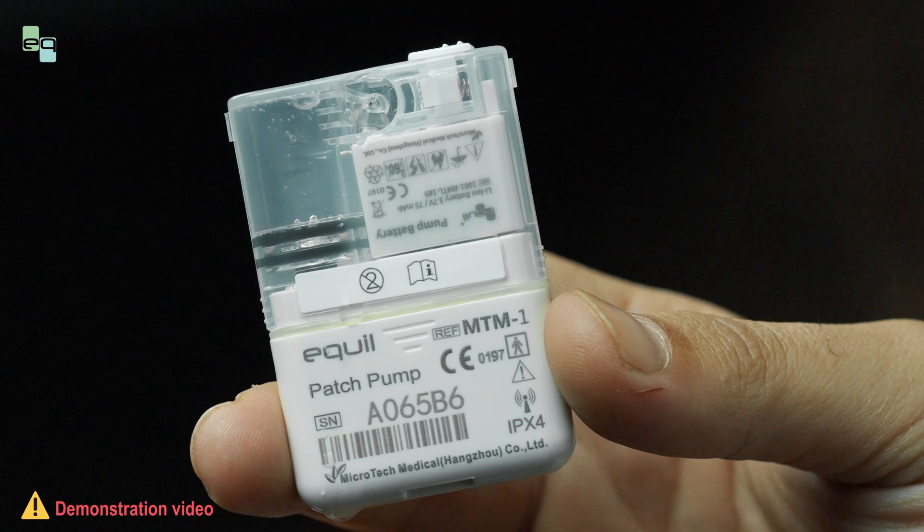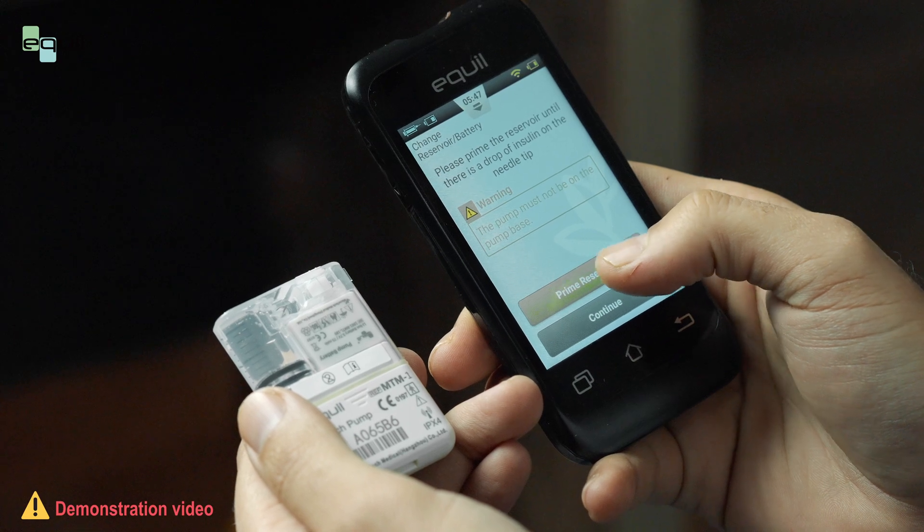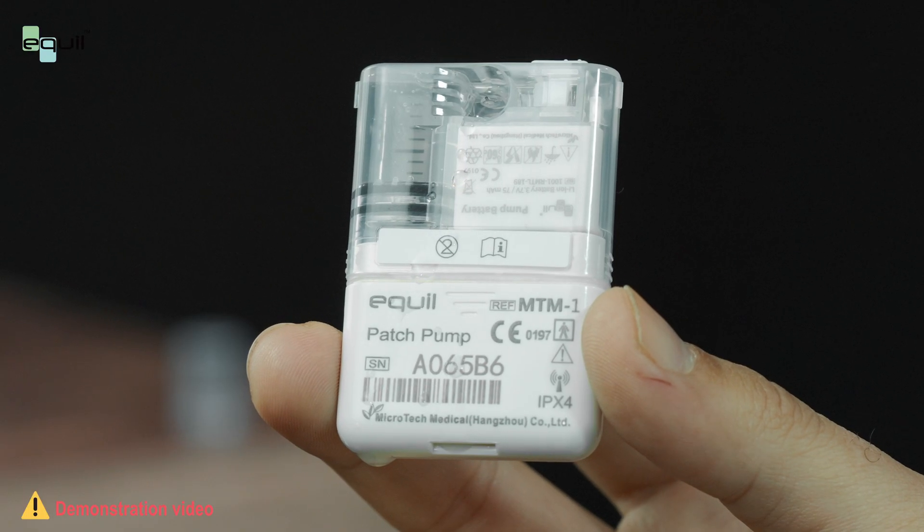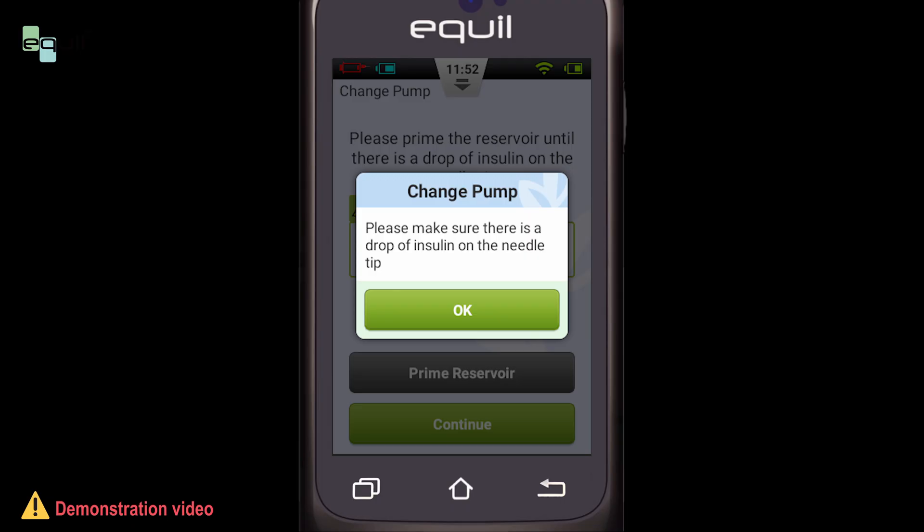Press Continue. Hold the pump in the position shown in the video and select Prime Reservoir. Then you should see an insulin drop on the reservoir needle tip, which means your pump is ready and a confirmation message will pop up asking for your assurance that there is an insulin drop. Select Yes.